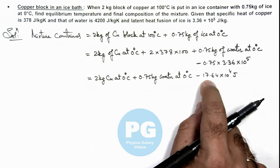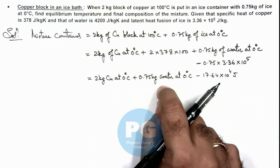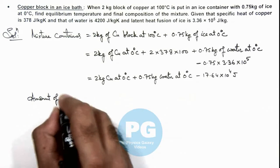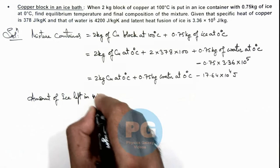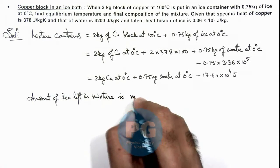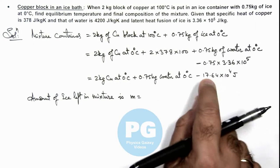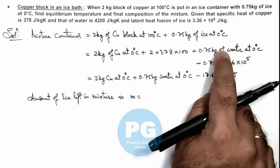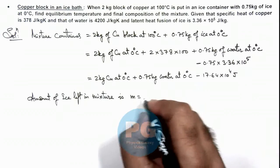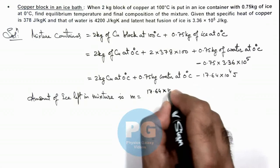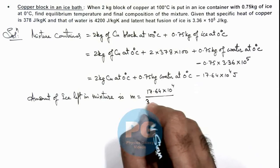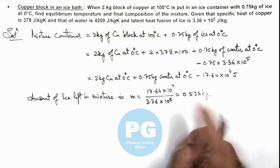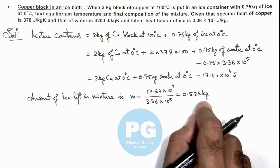So this amount of heat when it is released by water then it will transform into ice. So we can calculate the amount of ice left in mixture is this we can write as this much amount of heat which is available here, or practically we can say it has not been absorbed by ice. So we can write it as 17.64 × 10^4 divided by the latent heat of fusion 3.36 × 10^5, which is equal to 0.525 kg. So this much amount of ice is left in the mixture and remaining will melt to water.